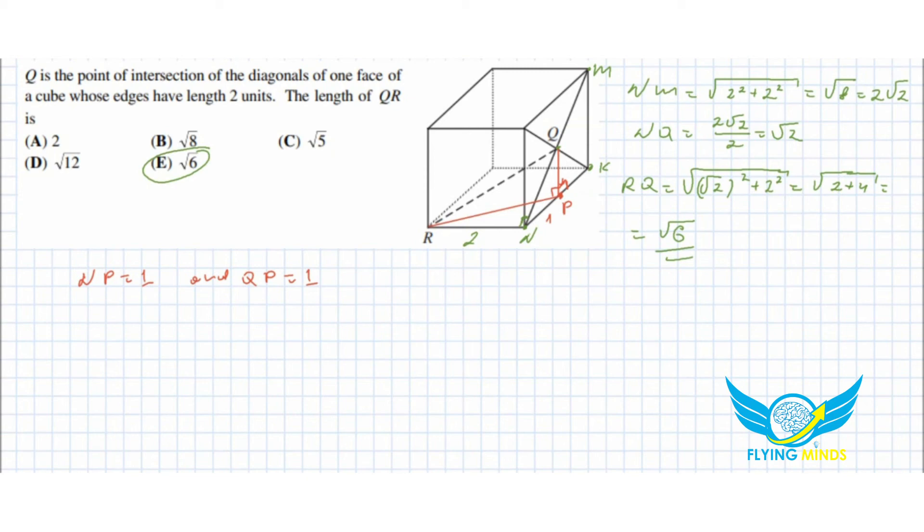To be able to find RQ, we need to know RP. RP equals to square root of two square plus one square equals to square root of five.